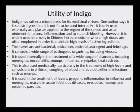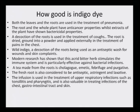Indigo not only has anti-fungal, anti-bacterial, anti-cancerous and anti-viral effects, but has also been used extensively for internal and external applications including bleeding and spleen conditions. Both the leaves and the roots are used in the treatment of pneumonia. The root and the whole plant have anti-cancerous properties, while extracts of the plants have shown bactericidal properties. A decoction of the root is also used in the treatment of coughs. The root is dried, ground as a powder and applied externally in the treatment of pain of the chest.